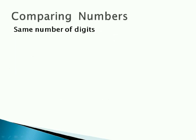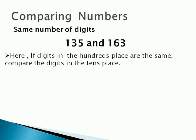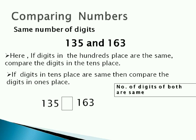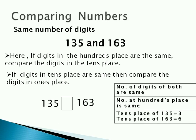Next is same number of digits. So now we have 135 and 163. Both are three digit numbers. First, check the digits in hundreds place. If they are same, then check for the tens place. And if tens place is same, then check for ones place. So in this example, number at hundreds place is same. Tens place of 135 is 3. Tens place of 163 is 6. As 6 is greater than 3, 135 is less than 163.